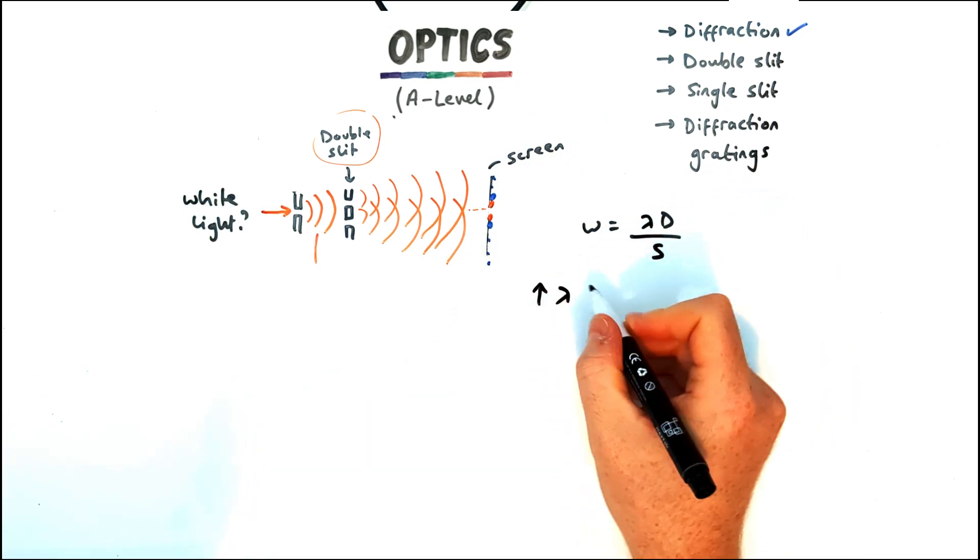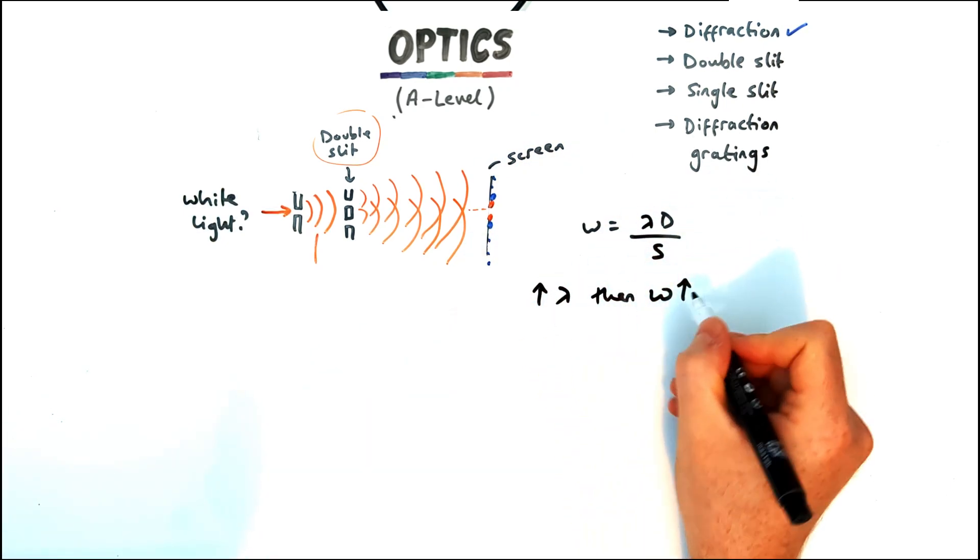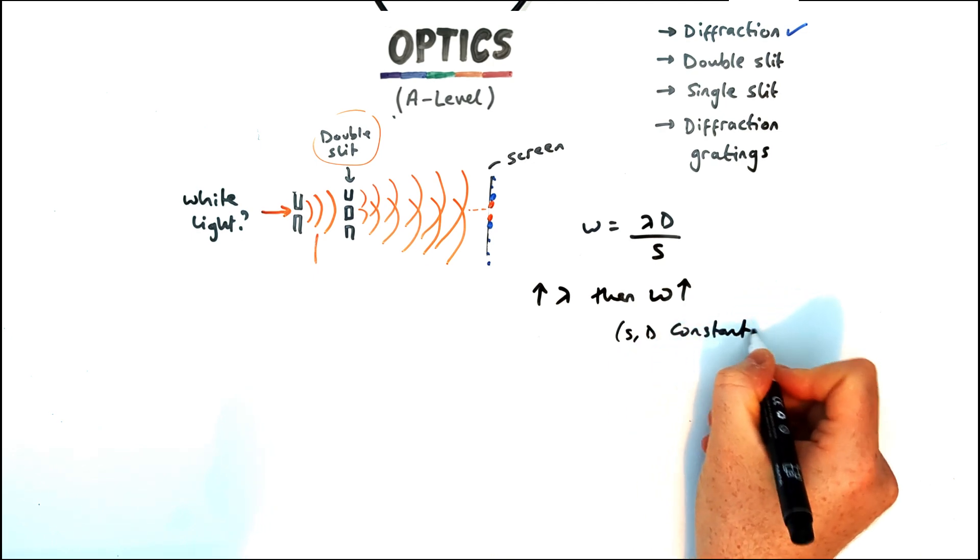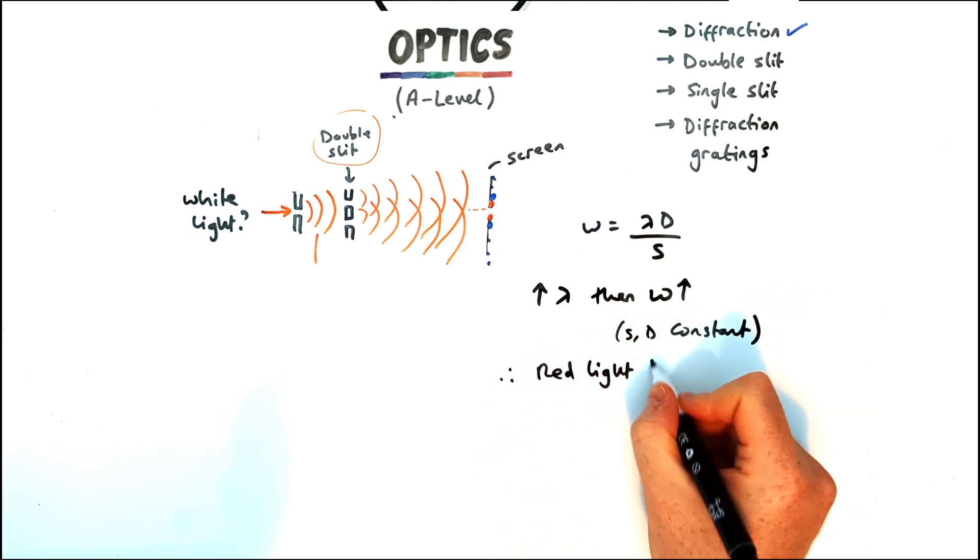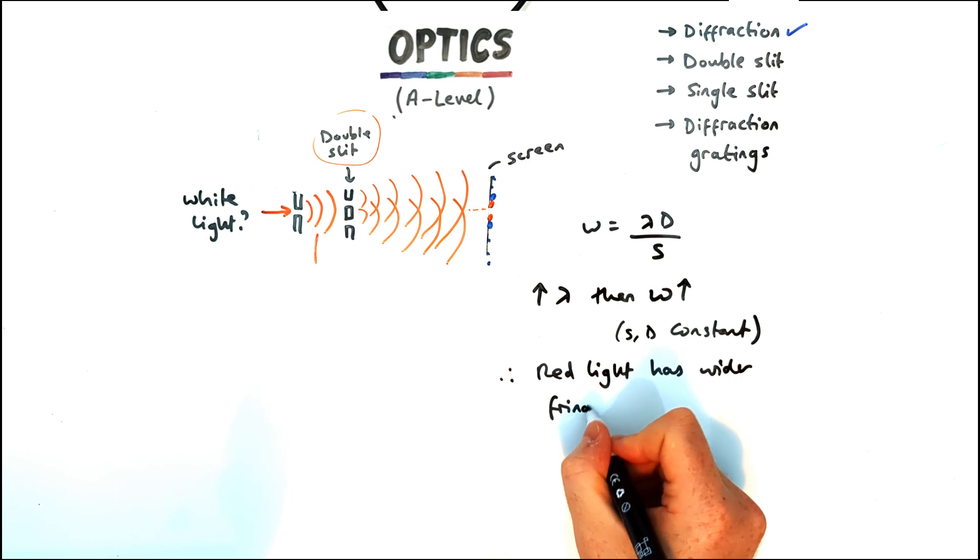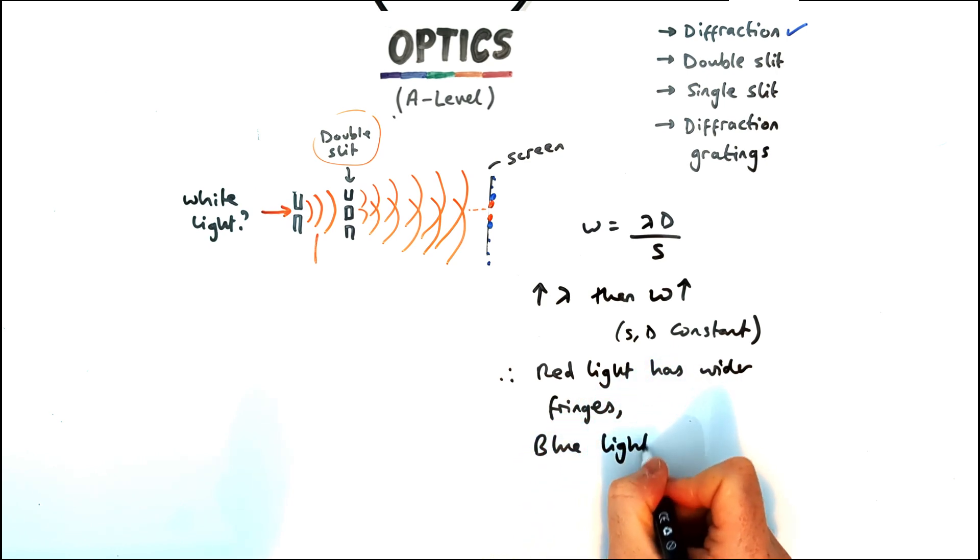So using this relationship the idea is if wavelength is bigger and everything else is constant then the width of the fringes has to be bigger. So red light has the wider fringes because it has a higher wavelength and blue light has narrower fringes or closer together because it has a lower wavelength.